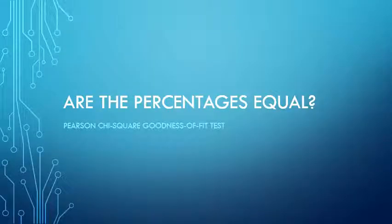Welcome. In this video I'm going to talk about the Pearson chi-square test for goodness of fit, which can be used to determine from a single nominal variable if the percentages are all equal. Warning: this is not about the Pearson chi-square test for independence.